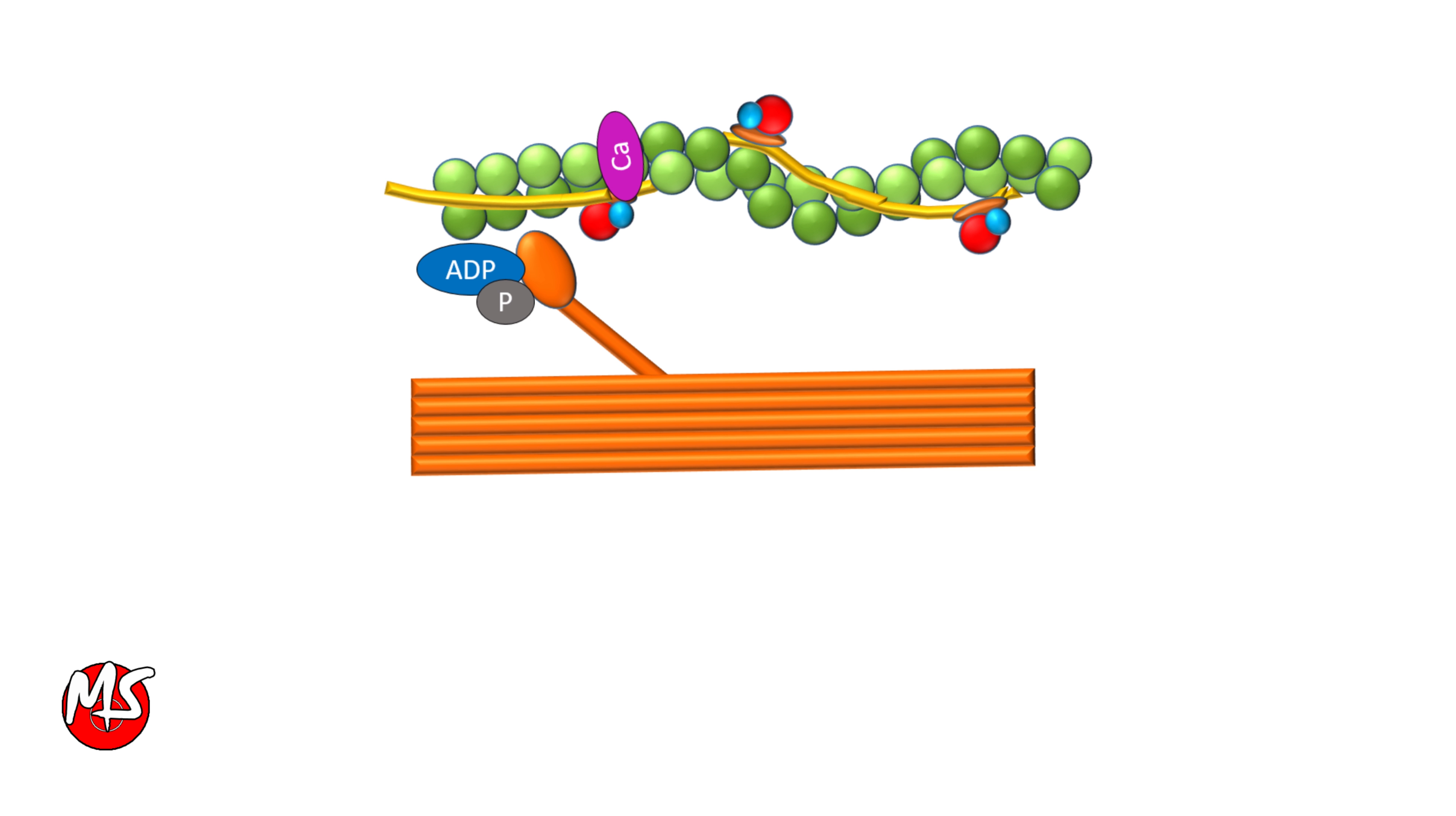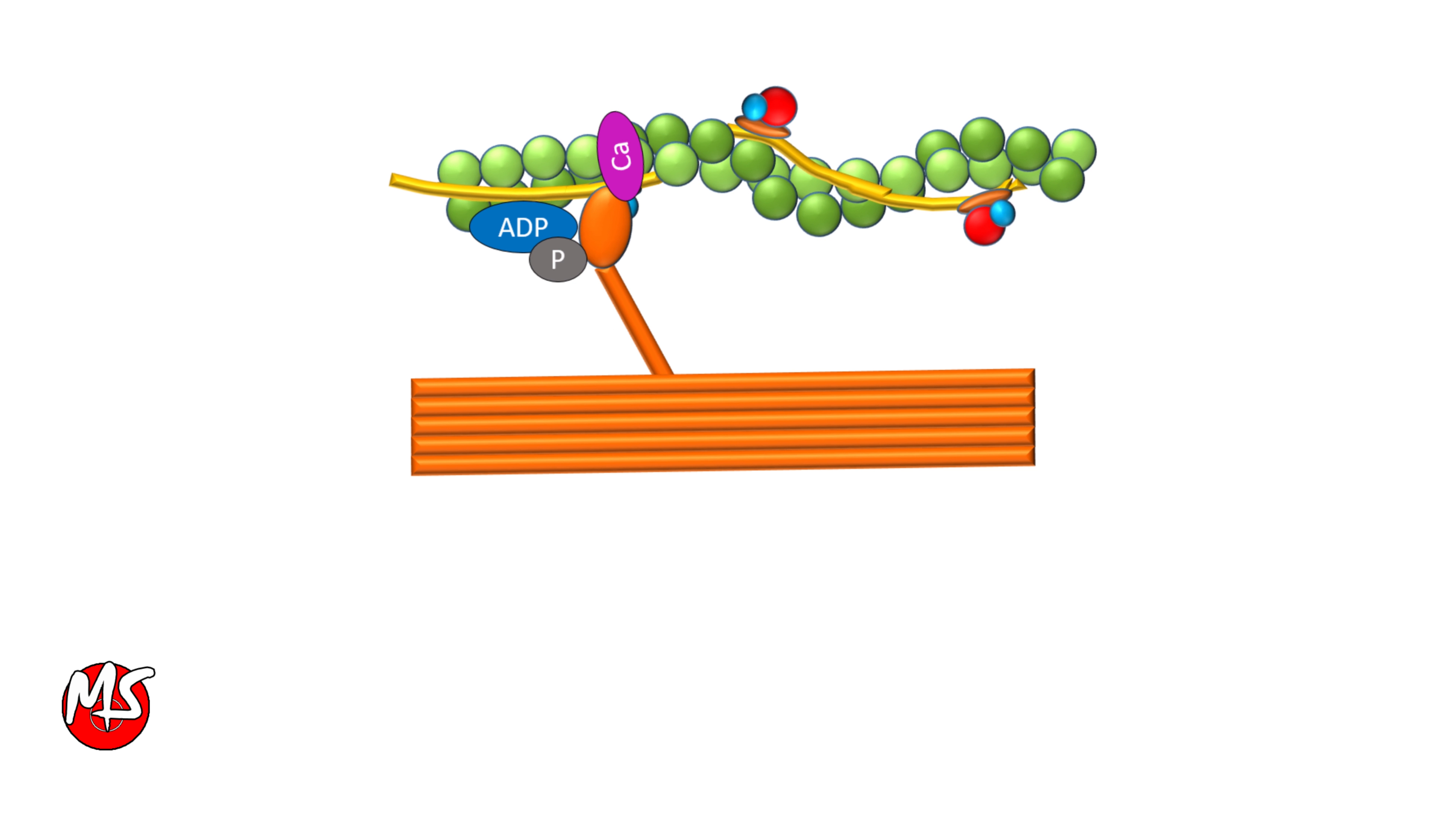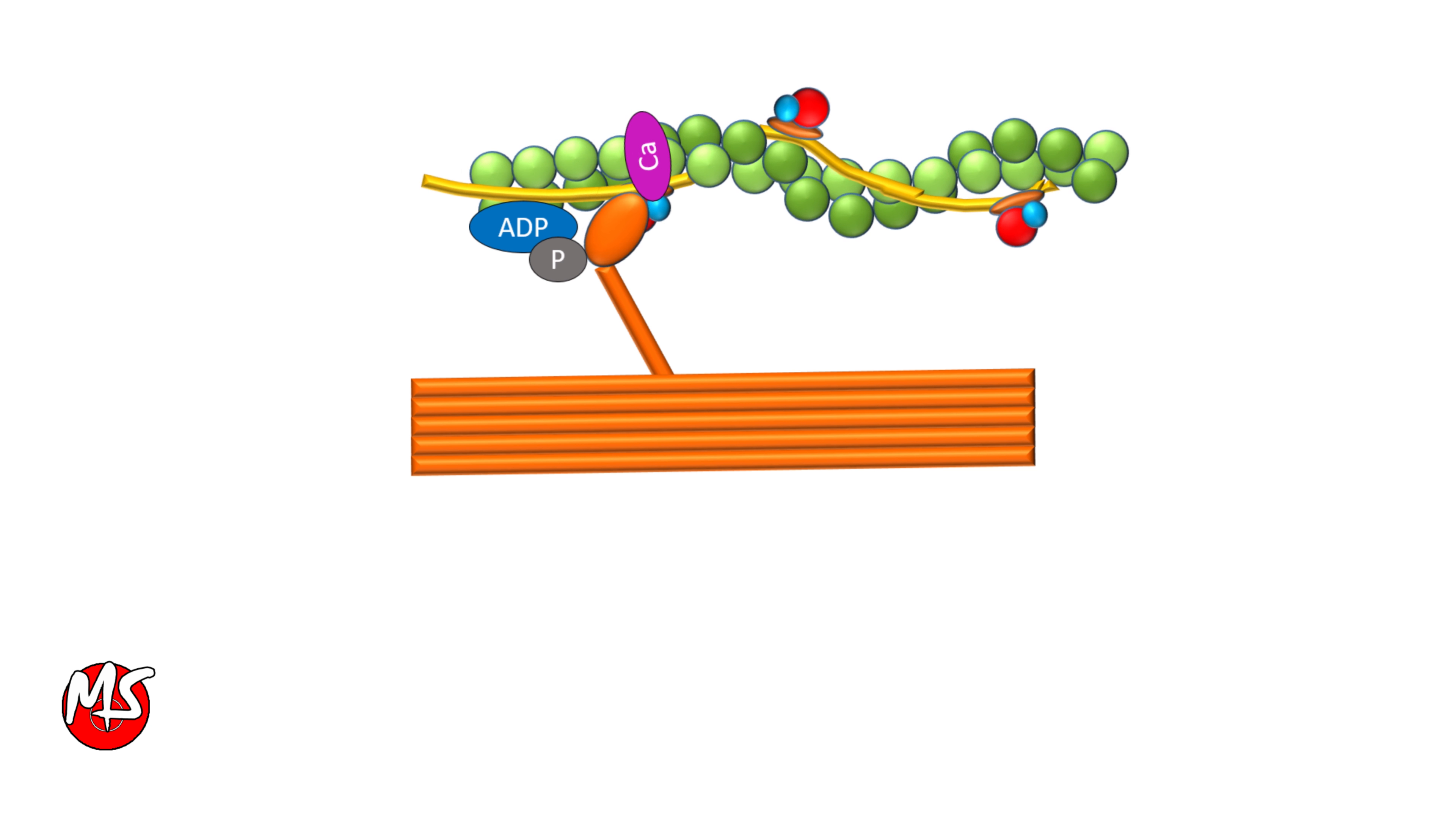As long as the calcium is bound to troponin C, the cross-bridging and the power stroke repeat, thus causing further sliding of actin filaments over myosin leading to further muscle contraction.